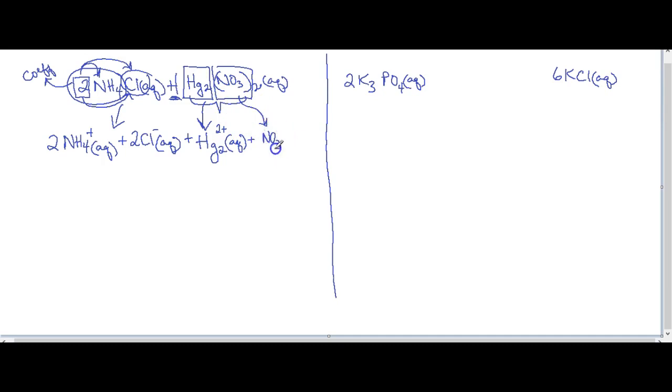And then NO3 is a polyatomic ion. We keep it all together. And it has a charge of negative 1 but a subscript of a subscript. So when you have a subscript outside of parentheses, this now becomes the coefficient in front of that ion. So basic rule.